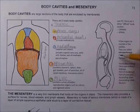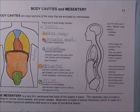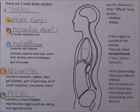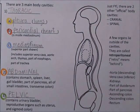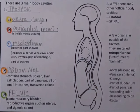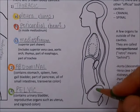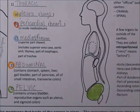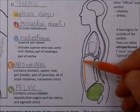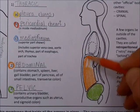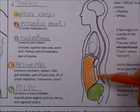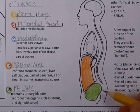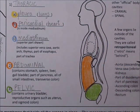Over here we just have the side view. We can make them the same colors over here that we have. Here's our pelvic down here and here's the abdominal. You notice there are some things sitting outside of these cavities — back here and here. What isn't in these cavities? There are some things that are behind these cavities.